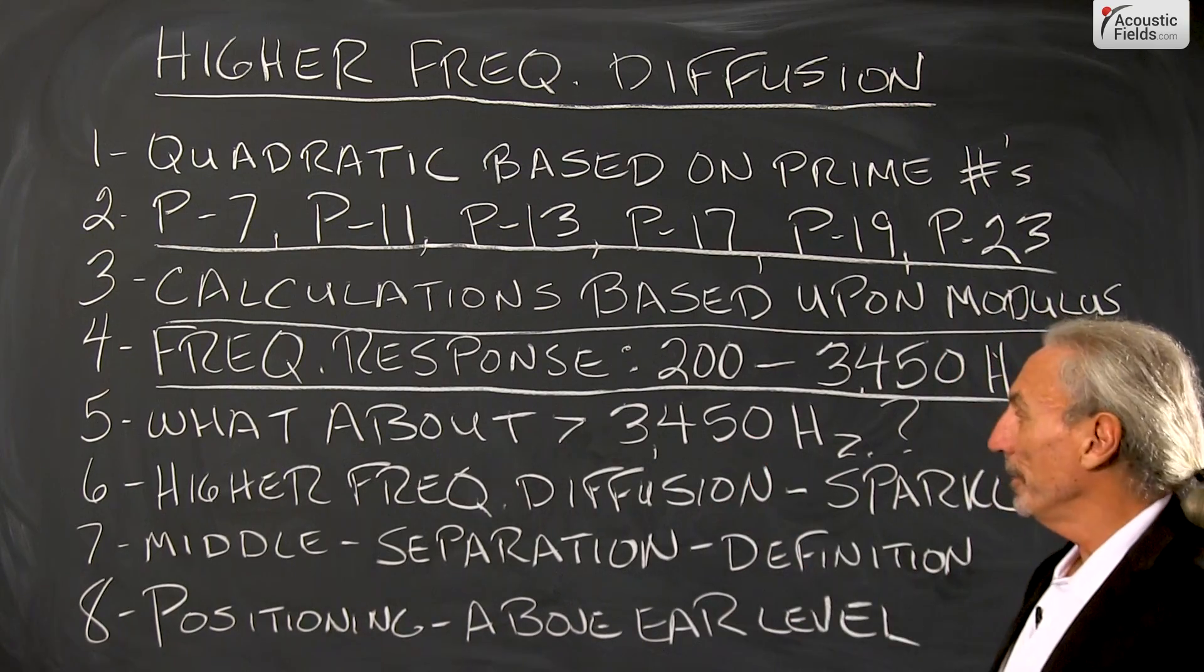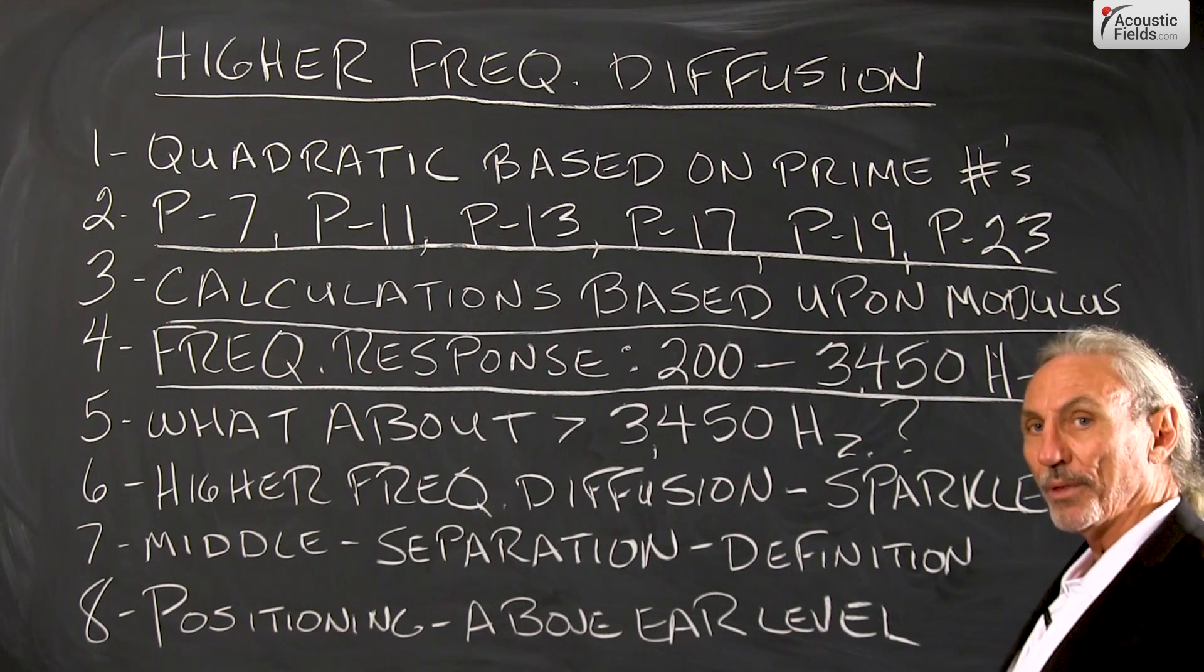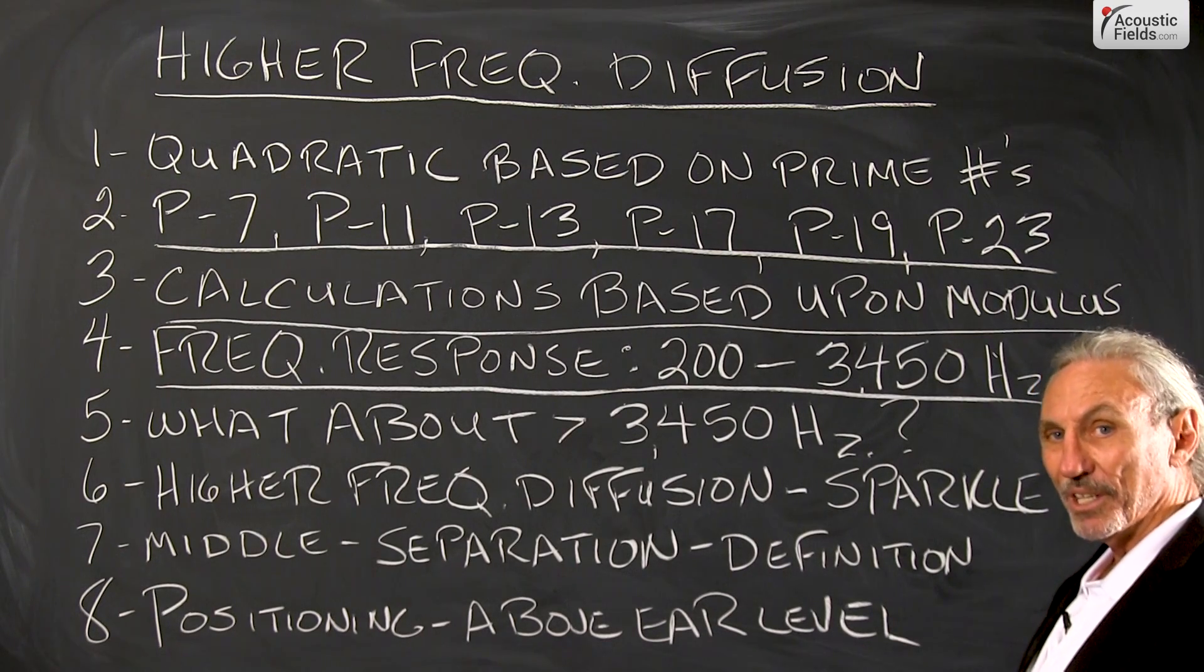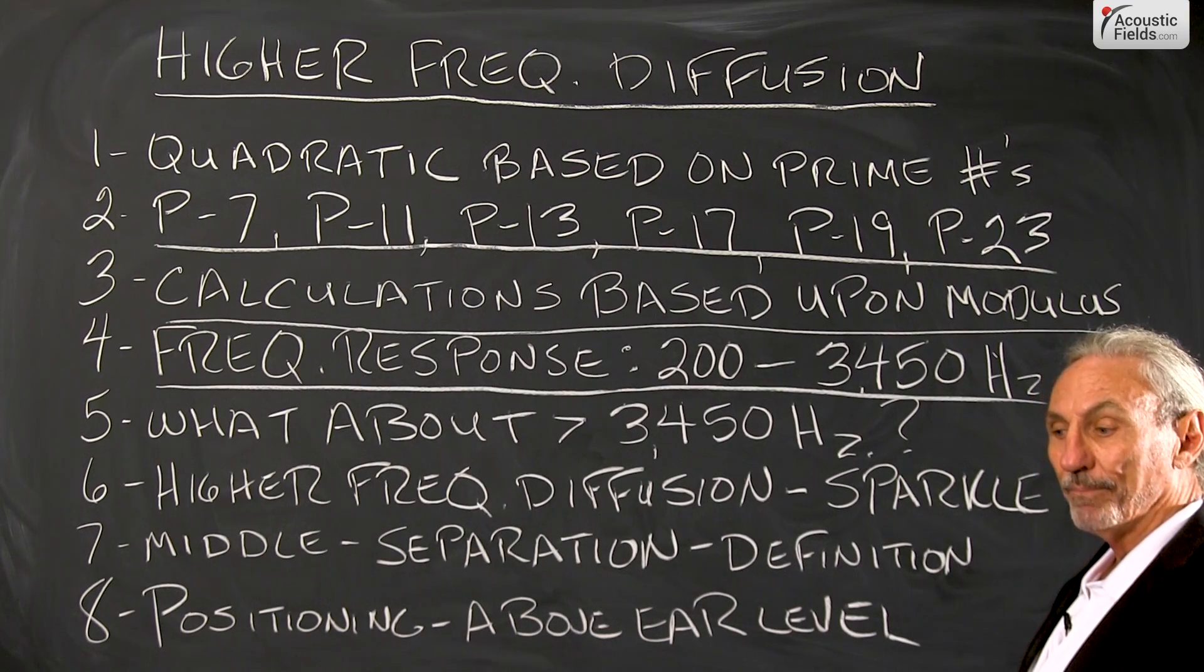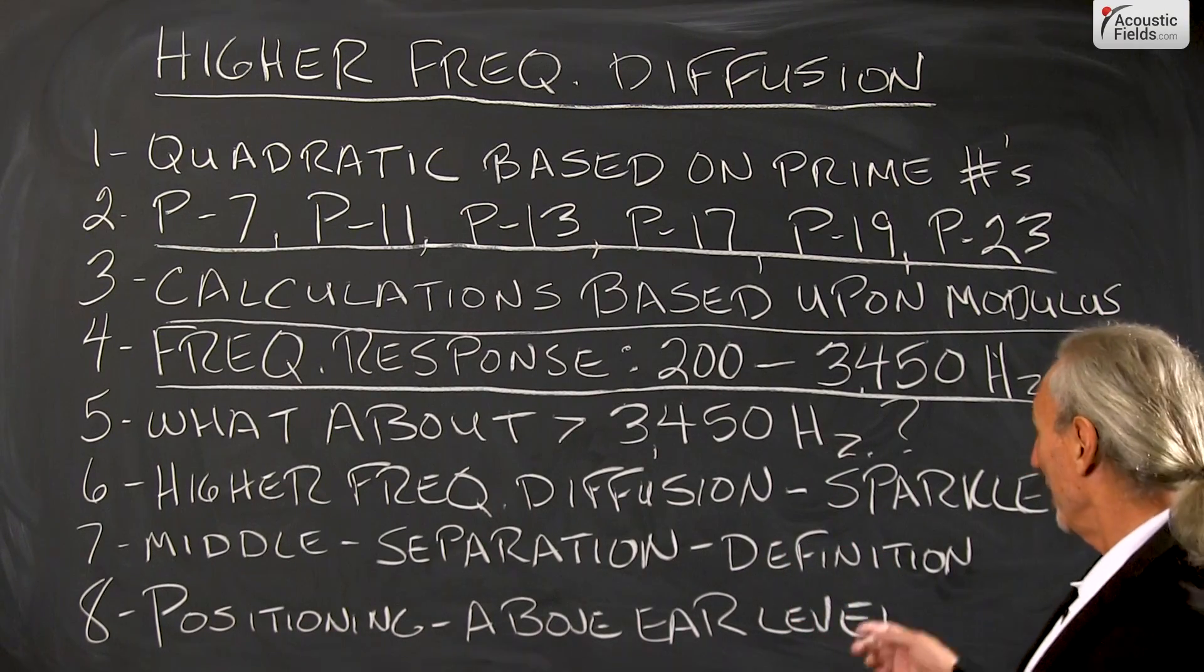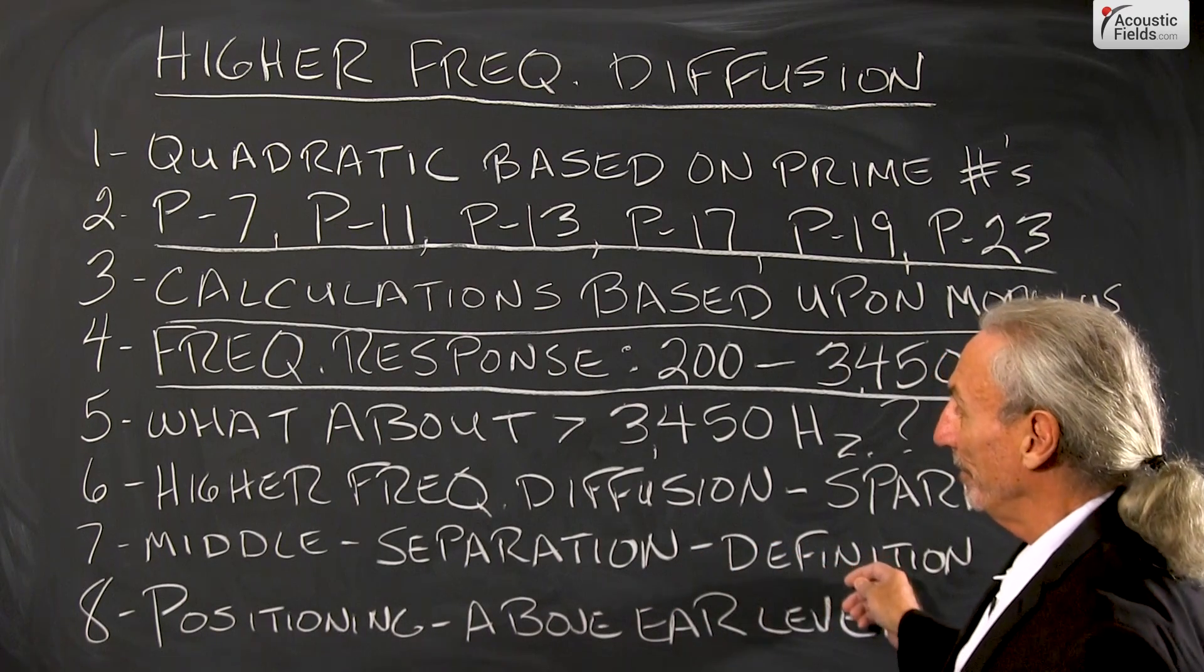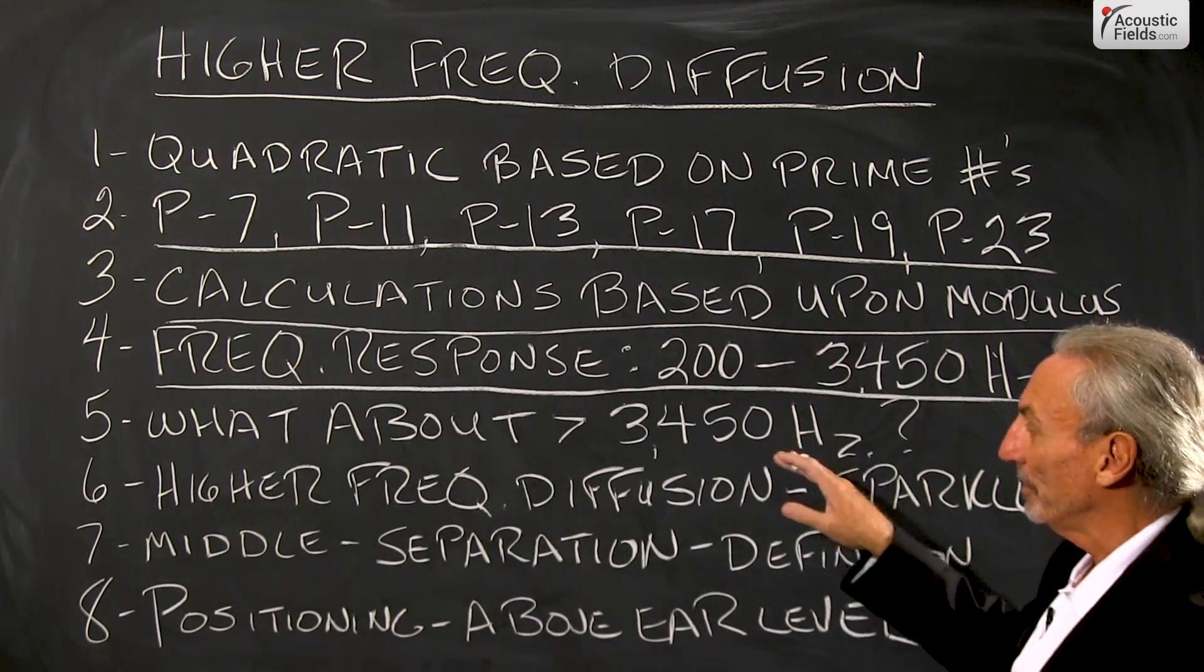So what about the frequencies above 3450? What about those 4000, those 5000, those 6000 cycle energies that give our brass instruments, our higher notes on the piano, give it that kind of spatiality and that what we call separation for the middle and high frequency separation for the normal diffusion.